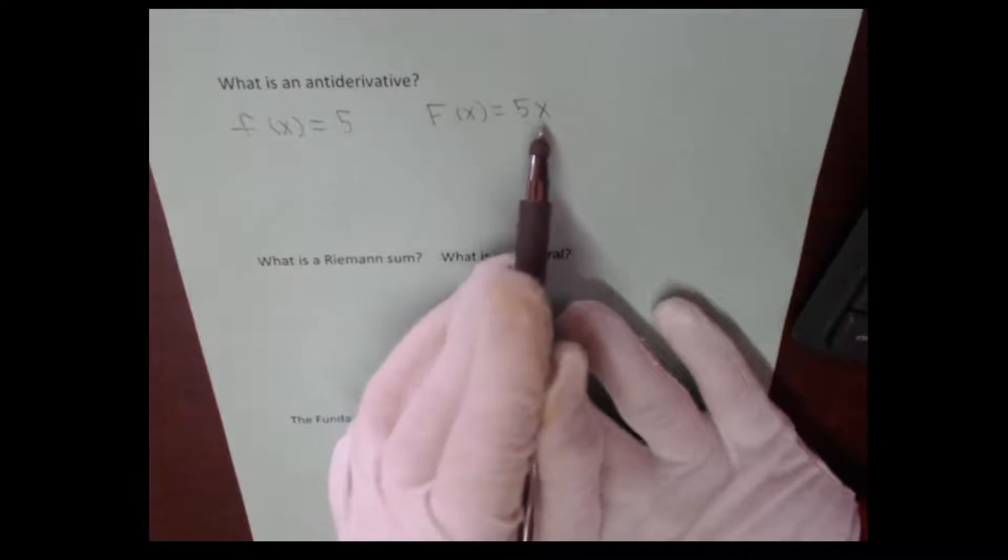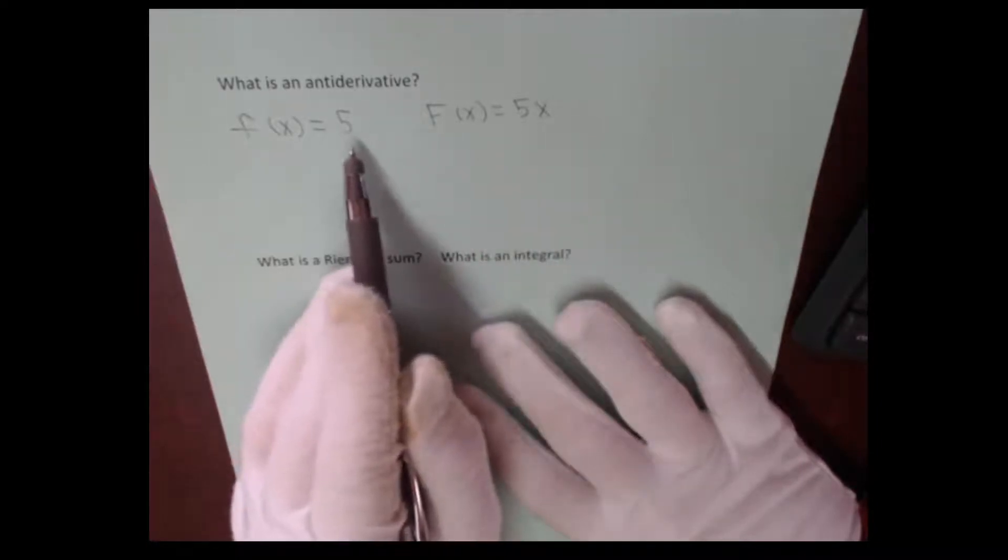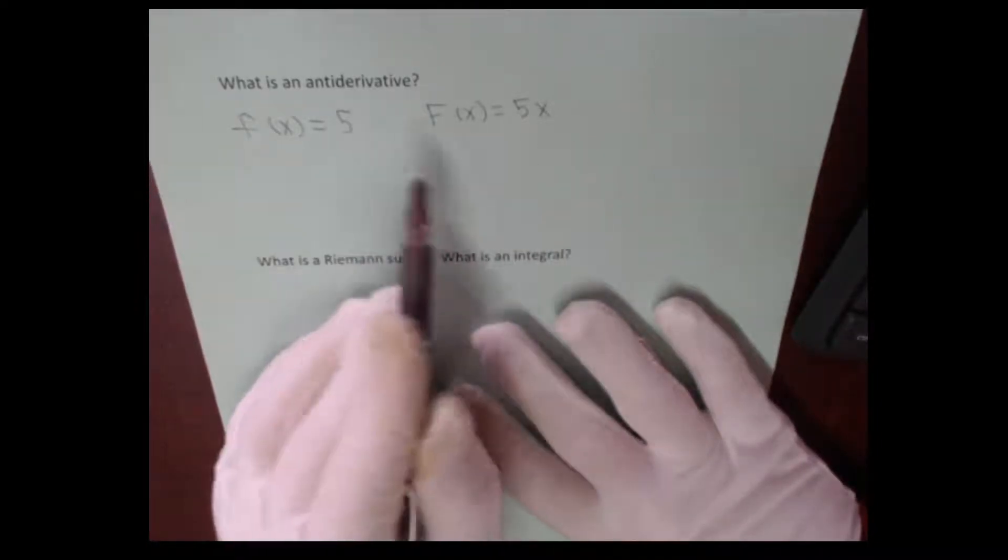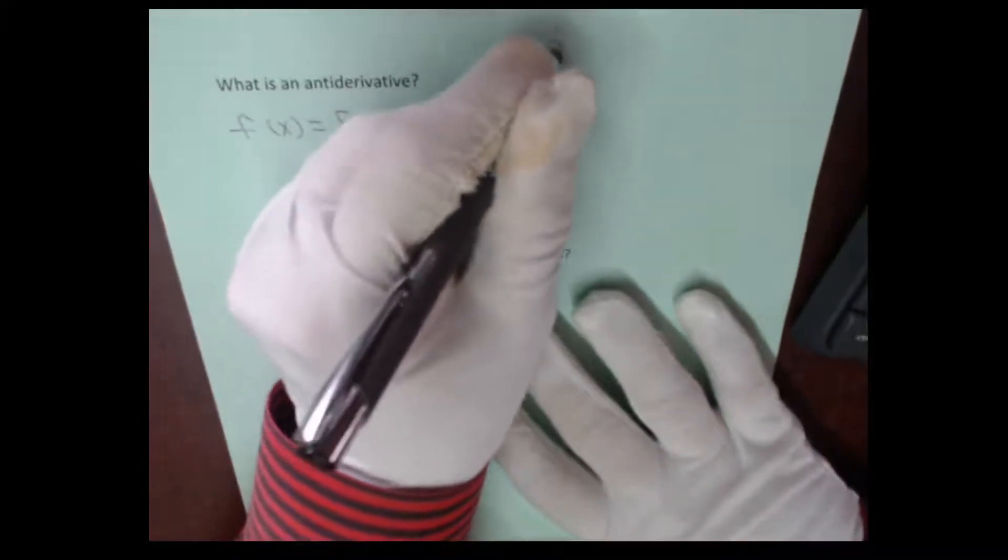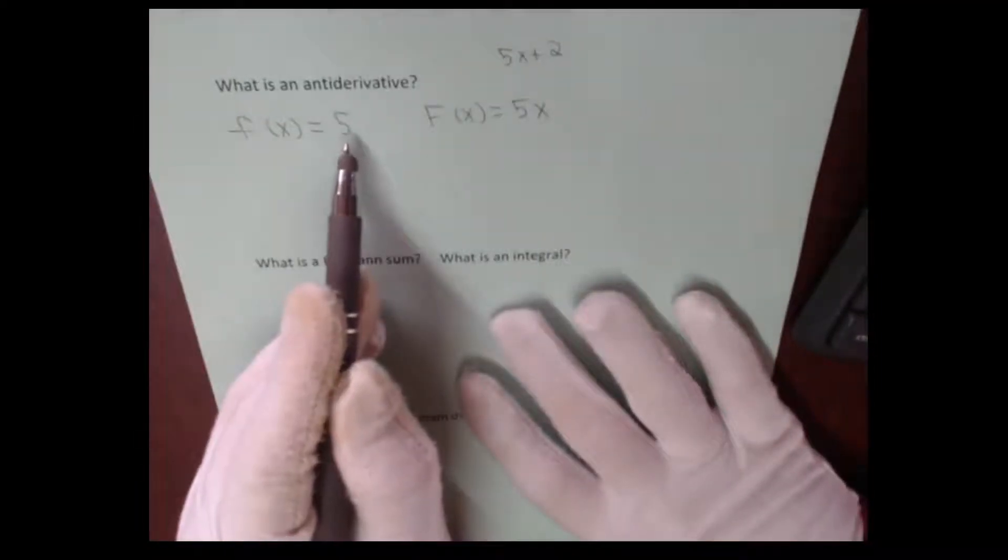The answer is 5x. It's okay if you didn't get it because when you look at this, it's obvious that the derivative of 5x is equal to 5. But there's one other element of this. Wouldn't you also have to acknowledge that the derivative of 5x + 2 is equal to 5? In fact, it is.